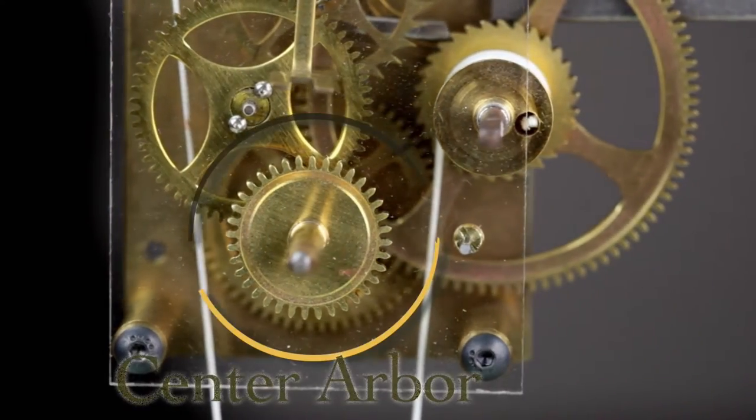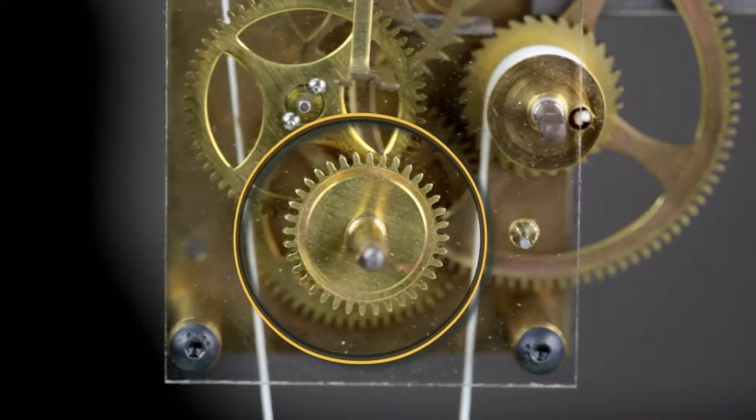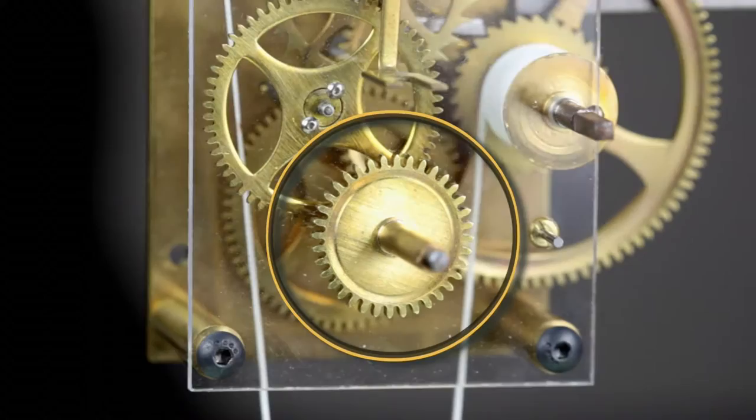In some movements, the center arbor is a direct part of the going train and plays a role in transferring power from the mainspring to the escapement.